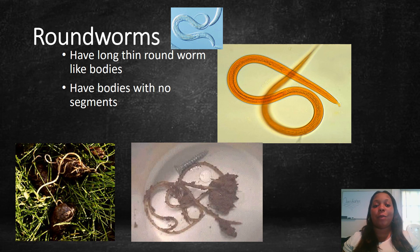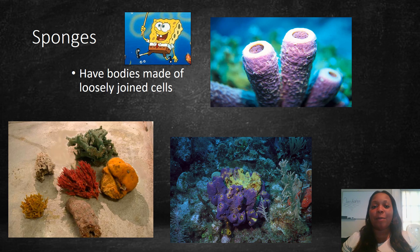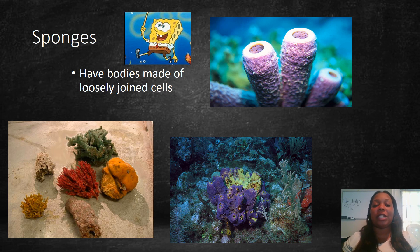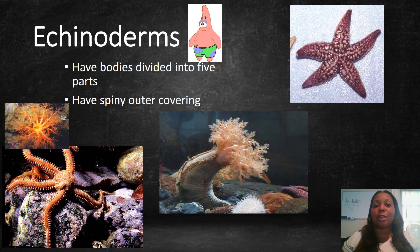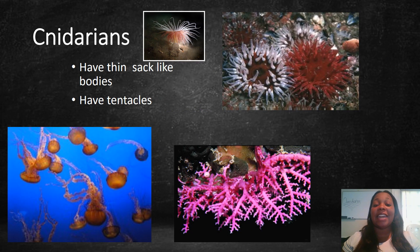Roundworms have long, thin, round, worm-like bodies with no segments. Sponges have bodies made up of loosely joined cells — did you know SpongeBob was fashioned after real sponge animals? SpongeBob's partner Patrick is fashioned after a sea star. Echinoderms have bodies divided into five parts and a spiny outer covering. Cnidarians have thin, sack-like bodies and tentacles — a common example is a jellyfish.